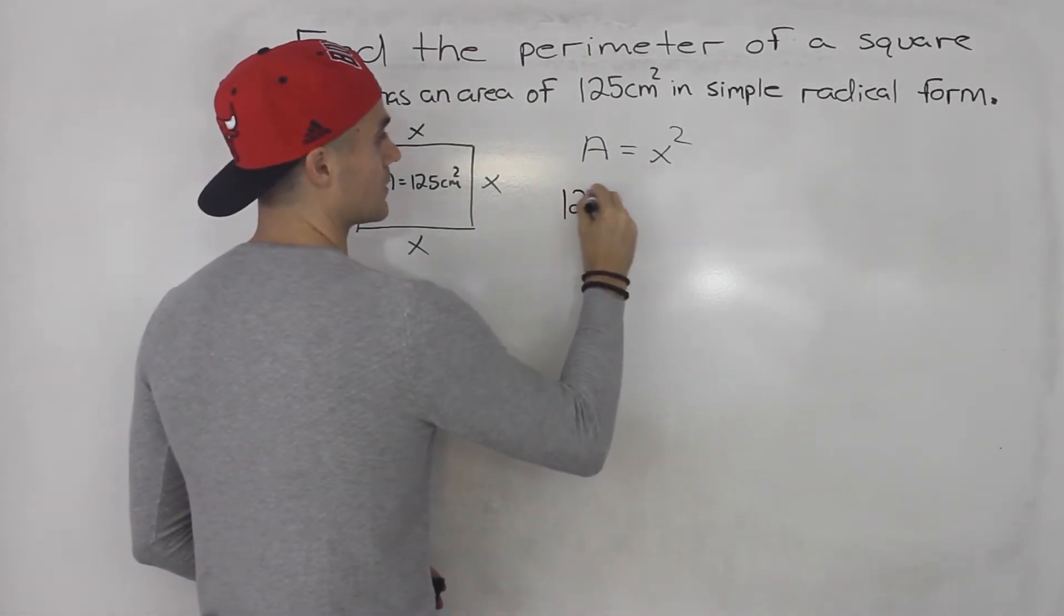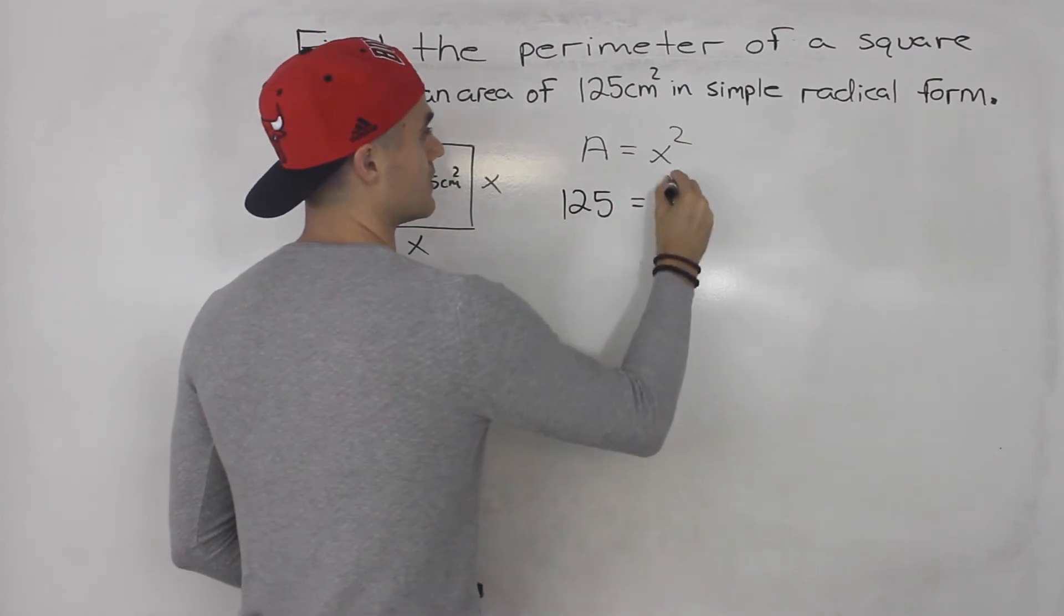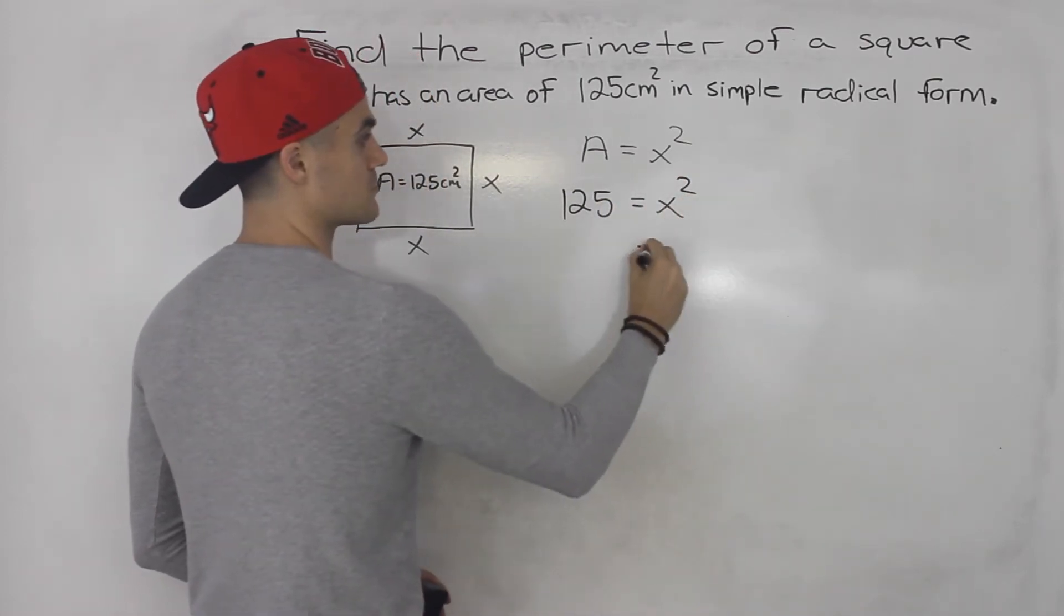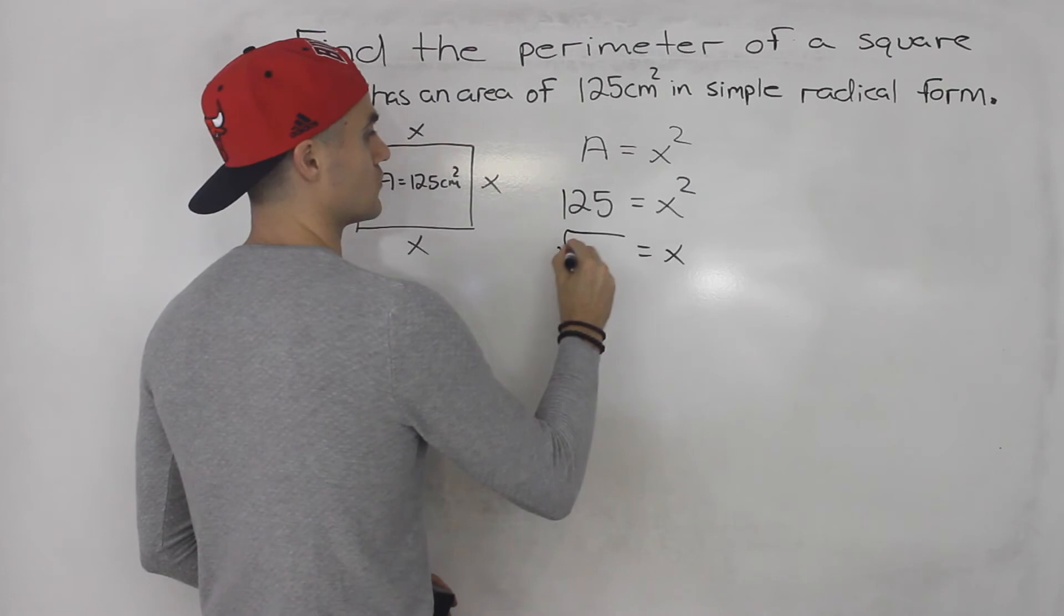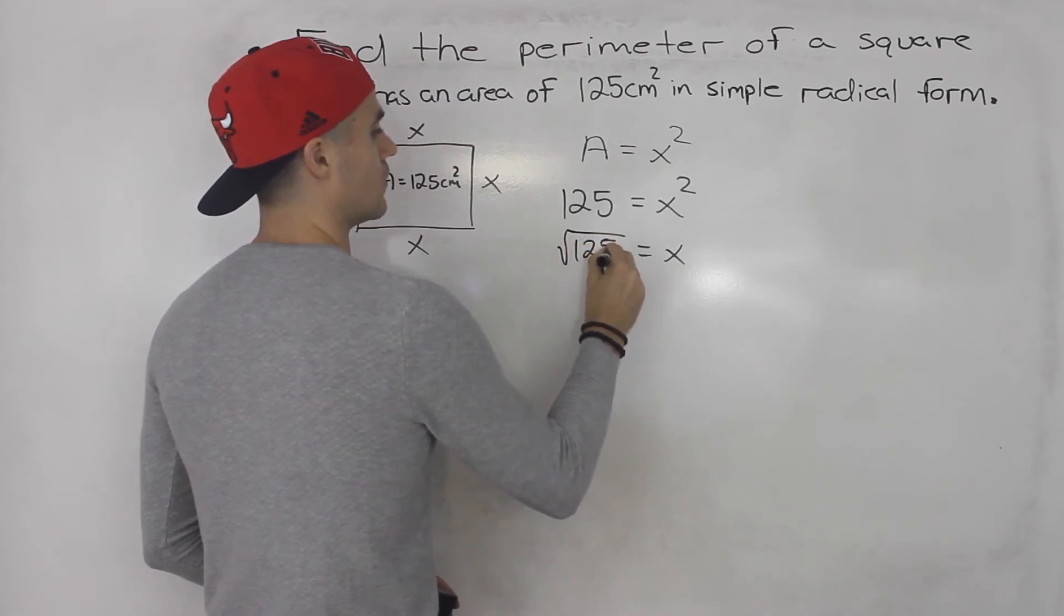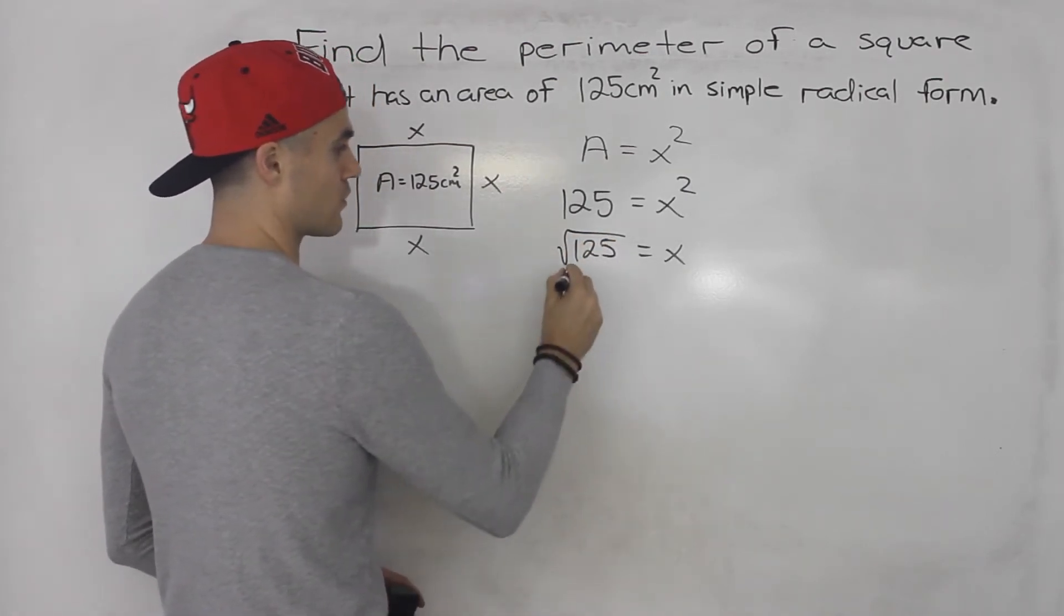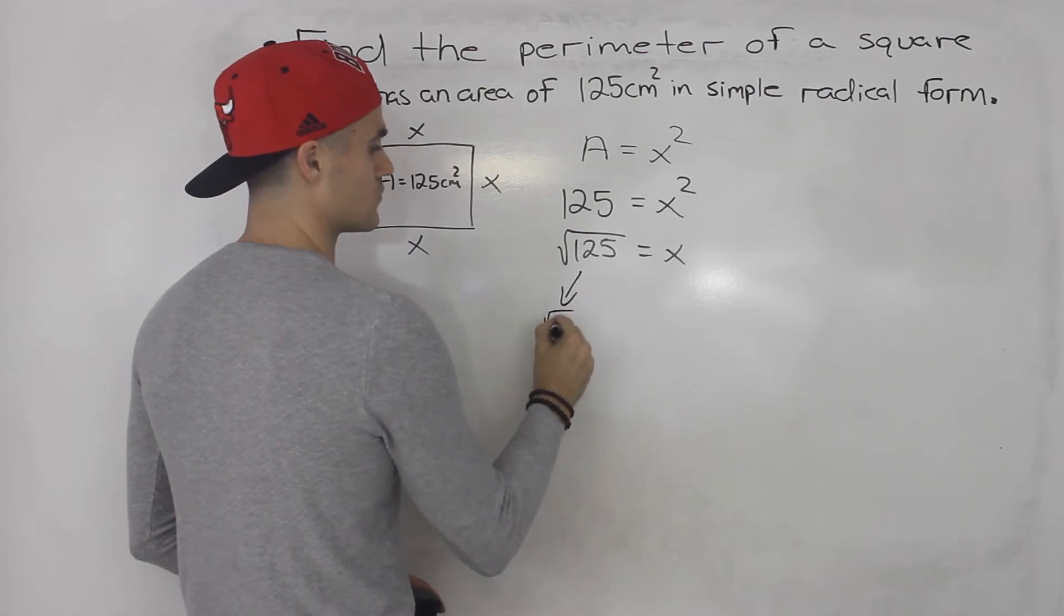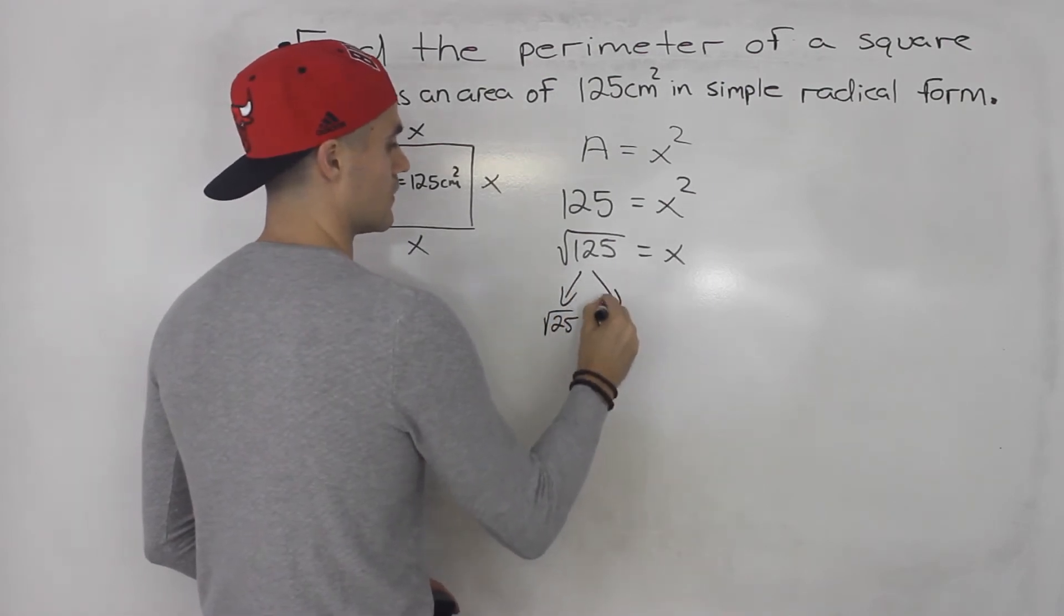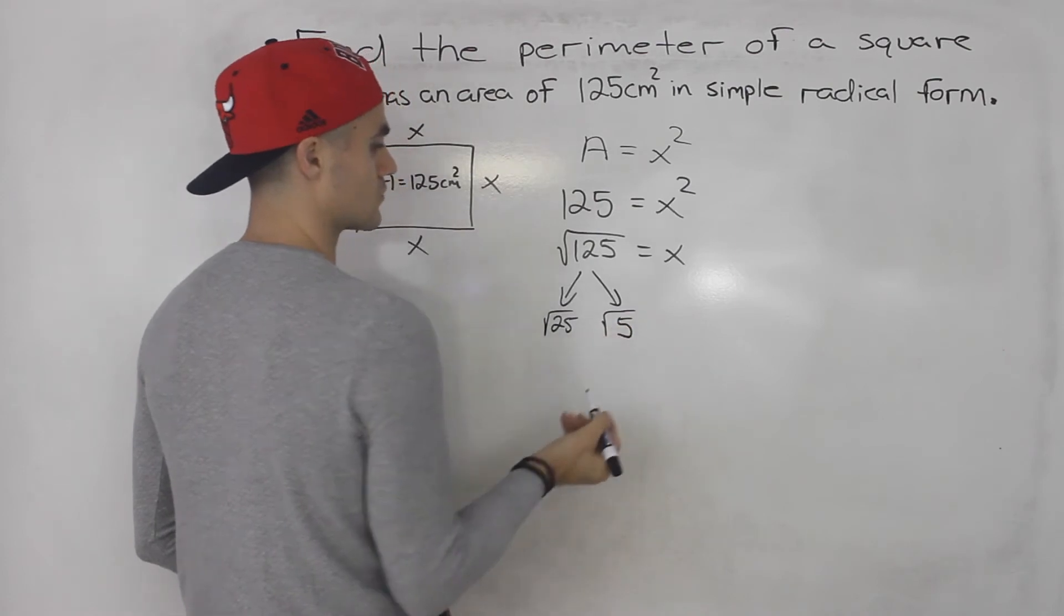So basically, 125 is equal to x squared, which means x is equal to root 125. And this we could simplify further. We could break this down into root 25 times root 5.